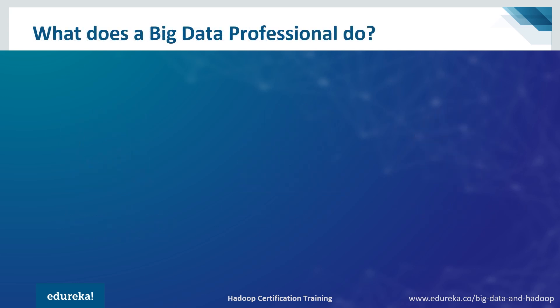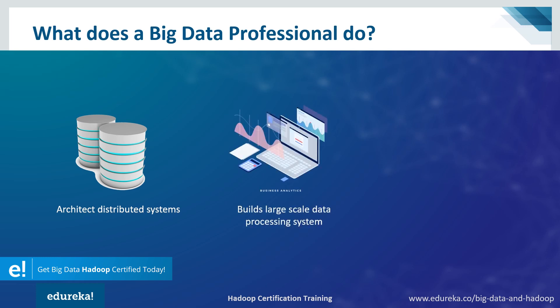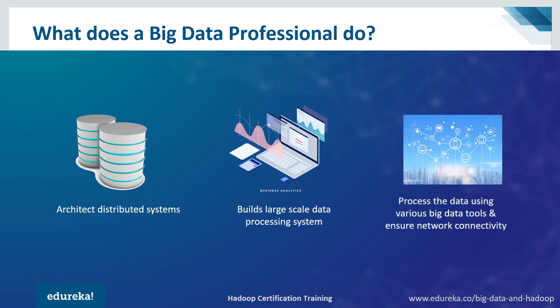Now let's see what does a big data professional do. They architect distributed systems for all the data that is collected and then provide security, scalability, and concurrency. They build large-scale data processing systems to store and process huge amounts of unstructured data, and process the data using various big data tools like Hadoop, Kafka, Spark, Hive, and also ensure that the network connectivity is up and running.